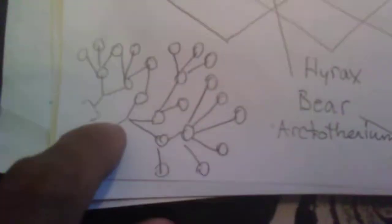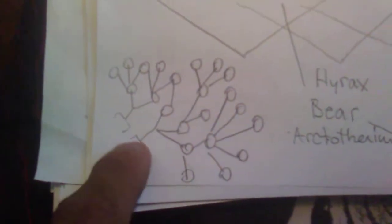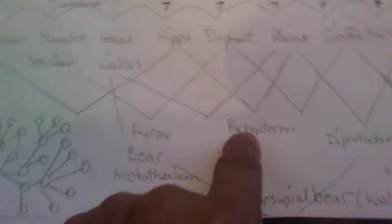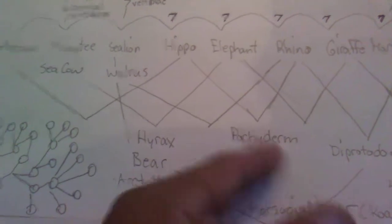I call this species overlapping because more or less every time you have one species you get two from that, and then those two will have two, and then those two will have two. It basically just keeps going and you're gonna get a variation of every one of these animals mixed with another cousin of it — like the cetacean and the hippo, the sea cow and the elephant, the hippo and the rhino. This would be a pachyderm type of species here.